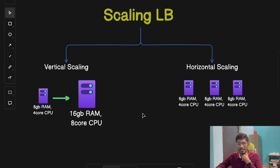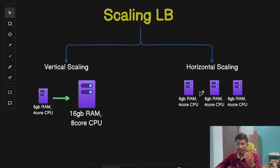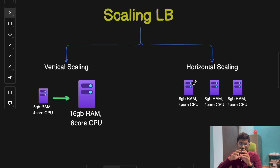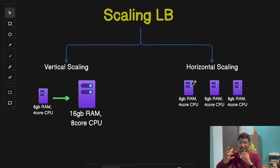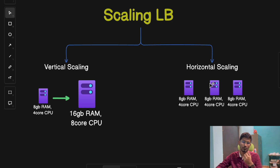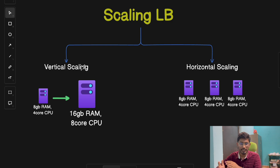Horizontal scaling, on the other hand, involves adding more load balancer instances to the system — not increasing the capacity of a single instance, but including more instances, which can be of the same or different sizes. It's like adding more cashiers to handle transactions at a restaurant instead of having a single highly specialized cashier. This method is generally more flexible and widely used in cloud-based environments, so we will often use horizontal scaling instead of vertical scaling.